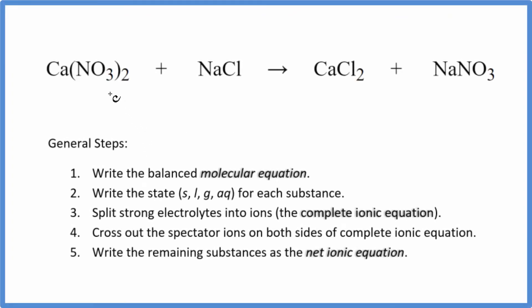In this video we'll write the balanced net ionic equation for Ca(NO3)2 plus NaCl, calcium nitrate plus sodium chloride. First thing we need to do is balance the molecular equation. There are two nitrates here and just one here. So let's put a two in front of the NaNO3. That balances the nitrates but now we have two sodium atoms.